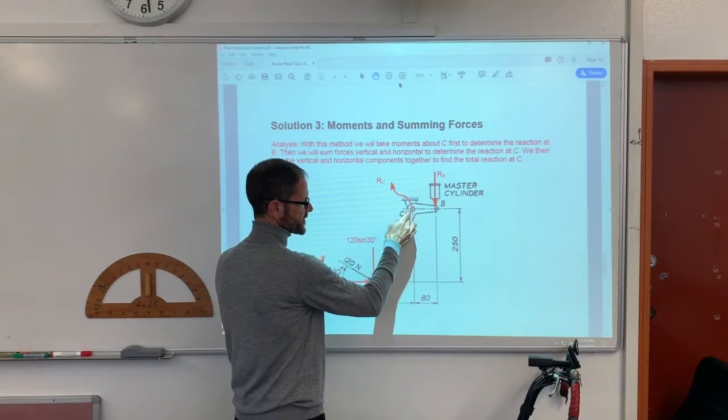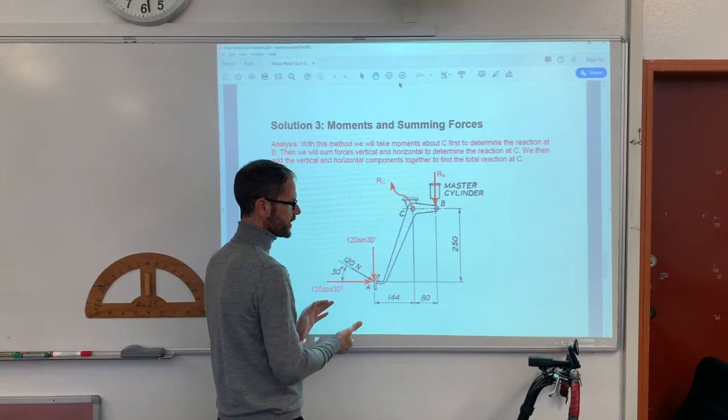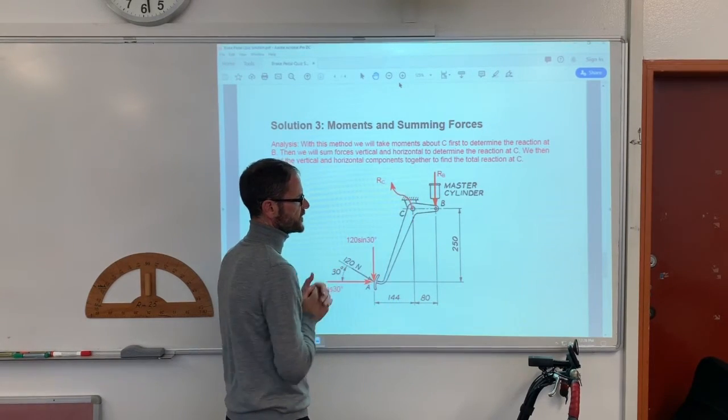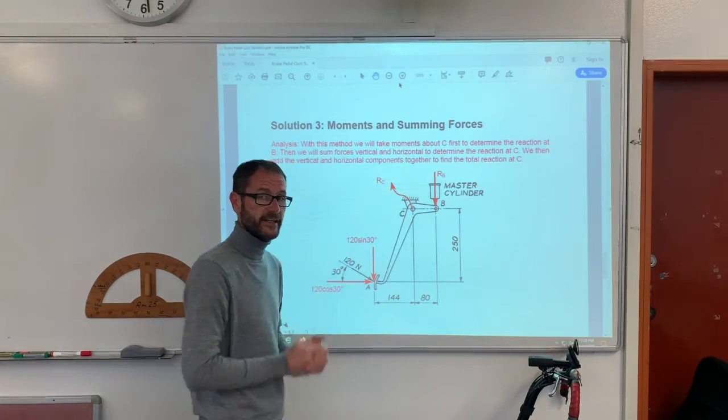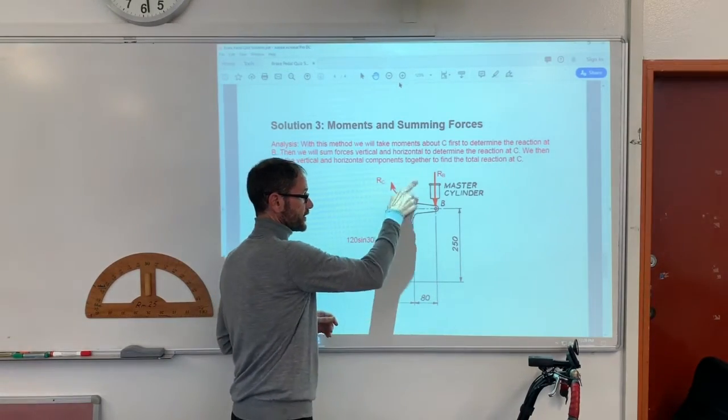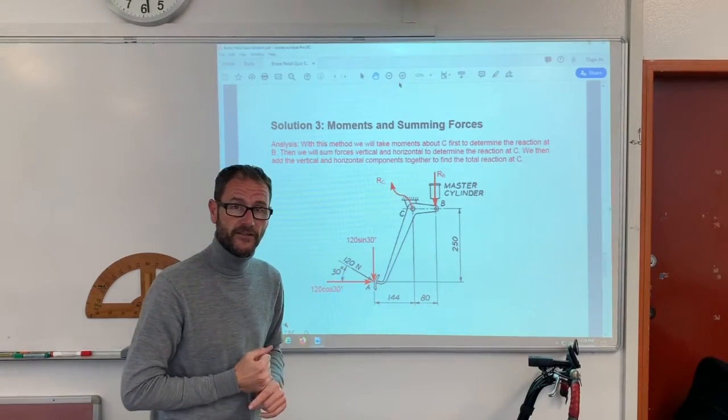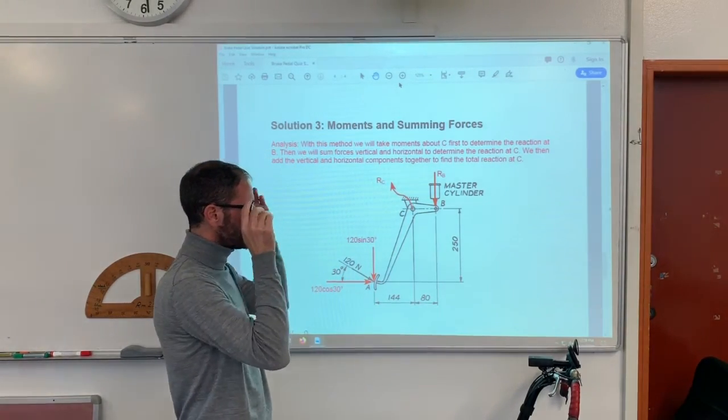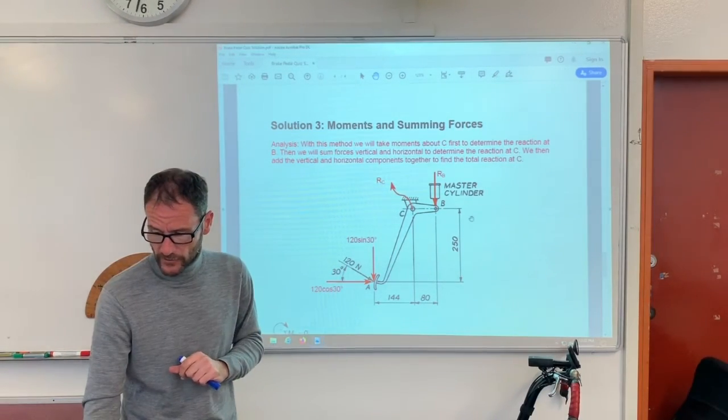So, first, sum moments about C to find the reaction of B. Then we're going to sum forces vertical to find the vertical component of C. Then we're going to sum forces horizontal to find the horizontal component of C. Then we're going to add together the vertical and horizontal components to find the actual reaction at C and then state its magnitude and angle. Yes, it is a longer process to do it this way.